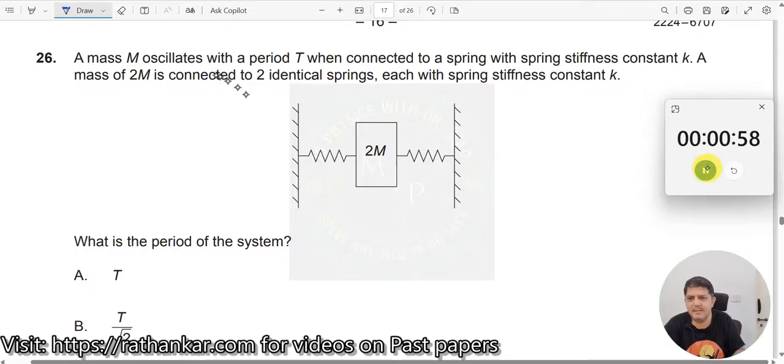Question number 26. A mass m oscillates with a period t connected to a spring with stiffness constant k. When you have a mass like this, when you have a spring like this, you are connected like this, then it starts oscillating with a time t.